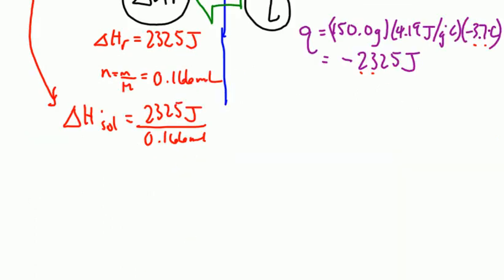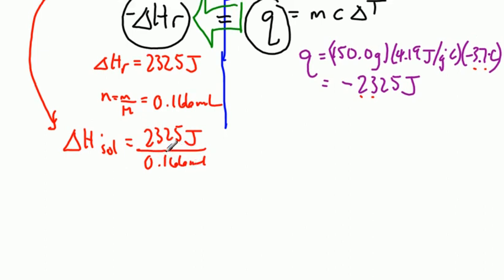So the delta H of the solution is going to be equal to 2325 joules per 0.166 moles. So we only dissolved 10 grams. 10 grams is much less than a mole, about 1 sixth of a mole. And so we need to make sure we take that into account. This isn't how many joules for one mole. It's how many joules for 10 grams. If we do this division, we get about 14,000 joules. And keeping in mind significant digits, we could just call that 14 kilojoules. And that's per mole.